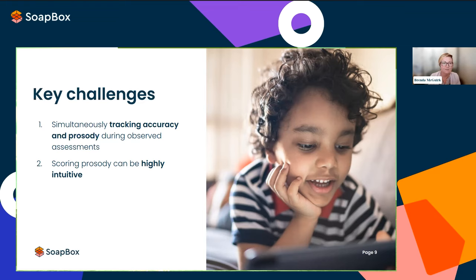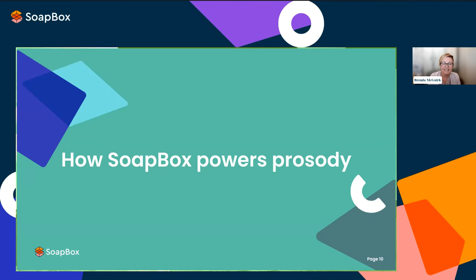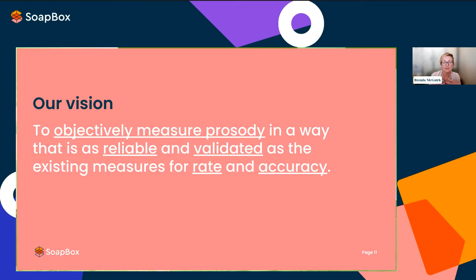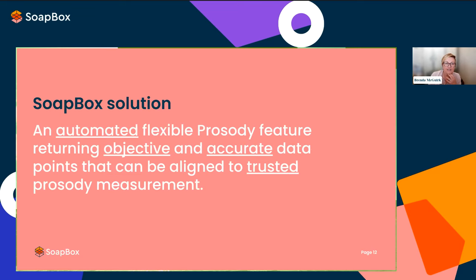Soapbox decided to take on that challenge. We wanted to objectively measure prosody in a way that was as reliable and validated as existing measures for rate and accuracy. The solution we came up with is an automated, highly flexible prosody feature that returns objective, accurate data points. Those data points can then be aligned to trusted prosody measures, whether internal measurements within your organization or well-known measures such as the NAEP measurement.